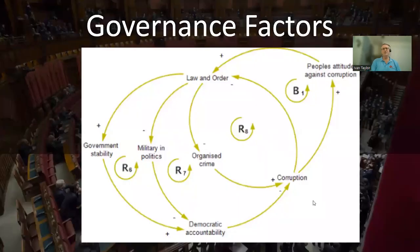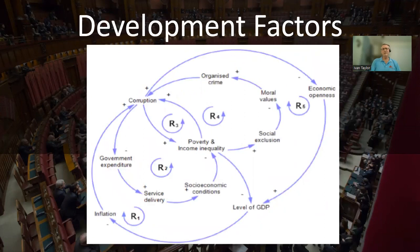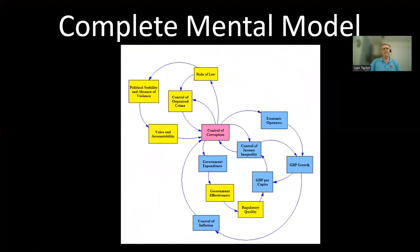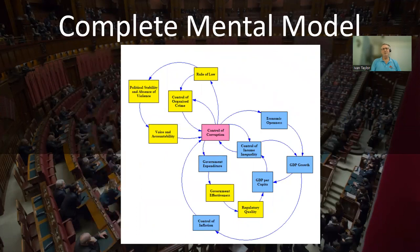These institutions were connected to each other, as shown here. We can see a number of positive reinforcing feedback loops in the governance institutions connections. This also shows the relationships between the development institutions and corruption, and again you can see a number of reinforcing loops. The complete model shows development institutions in blue, governance in yellow, and control of corruption in the center.